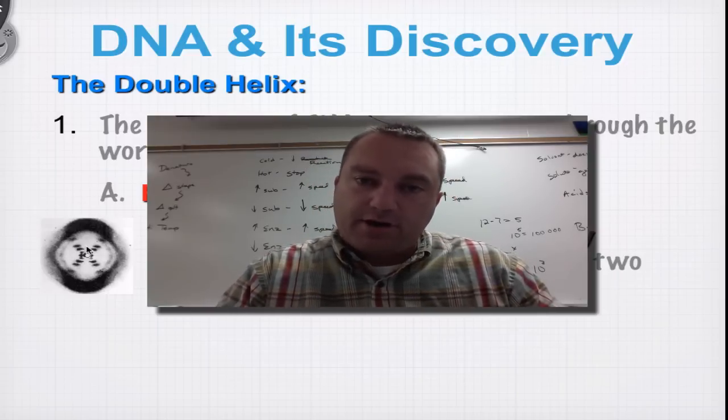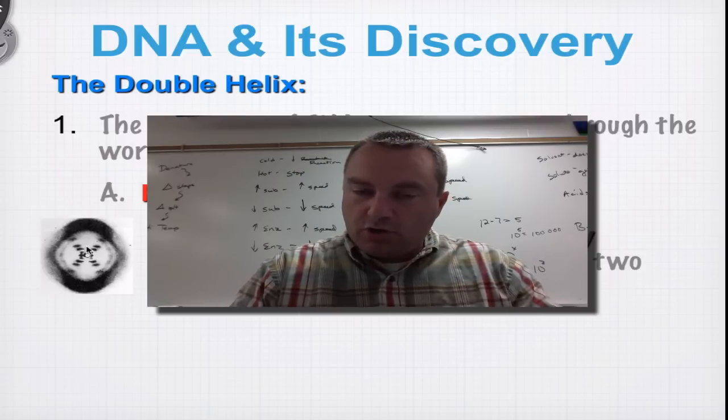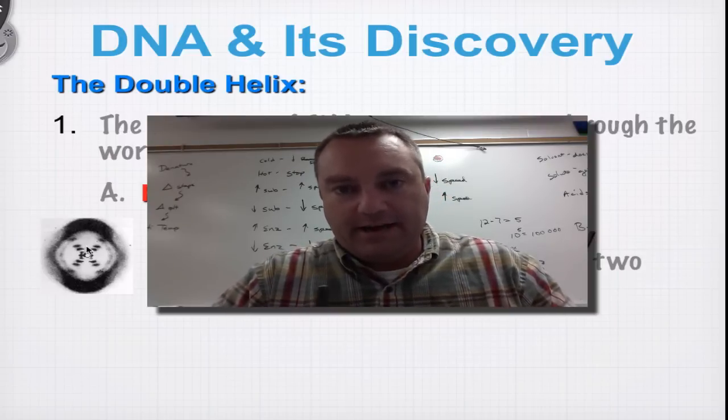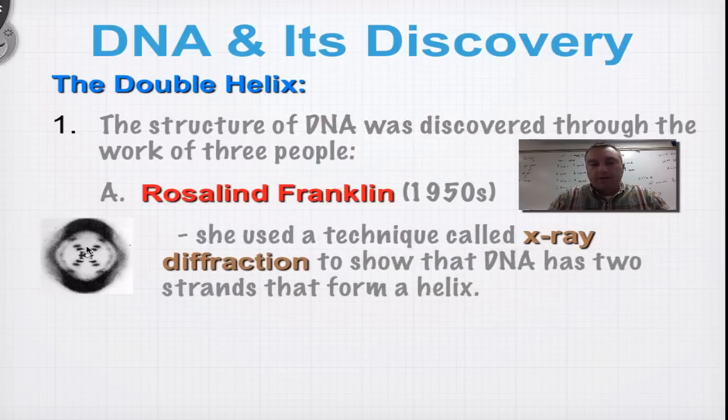But first, I want to talk about the two groups of scientists who really honed in on the double helix structure of the DNA. And it starts with this woman. A woman in the early 1950s, her name was Rosalind Franklin, and she's doing her work in England. And she's working on a technique that's called x-ray diffraction.